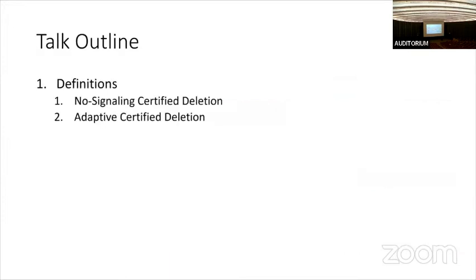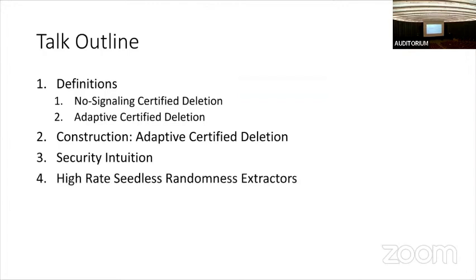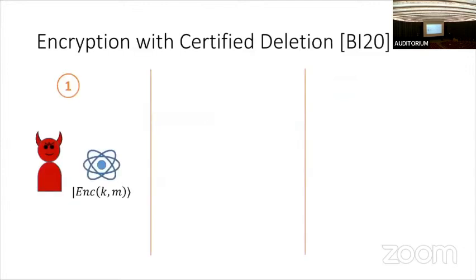For the rest of the talk, I'll start by giving our definitions — we actually have two different incomparable definitions: no-signaling certified deletion and adaptive certified deletion. Then I'll go over the more technically interesting of the two constructions, which is for adaptive certified deletion, and give a security intuition for it. Finally, I'll give an overview of our high-rate seedless randomness extractors and conclude with some open problems.